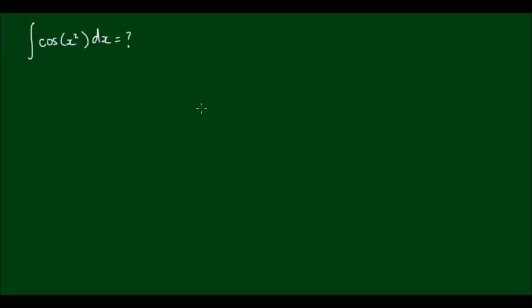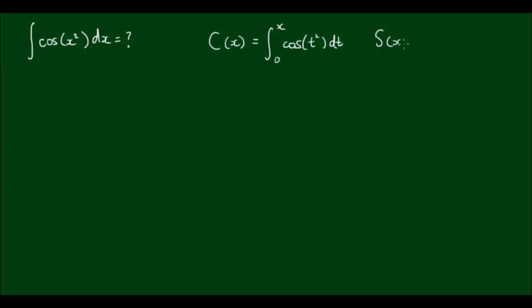It has quite a lot of applications in optics, and it's closely related to the error function. There's a version for cos and a version for sin. The Fresnel function for cos is written as C equal to the integral from 0 to x of cos(t²) dt. And the Fresnel function for sin is equal to the integral from 0 to x of sin(t²) dt.